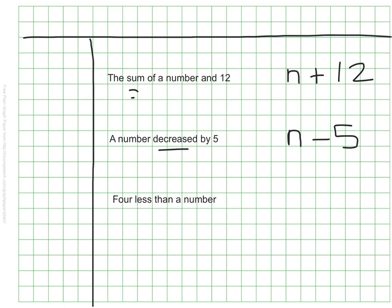I wrote that it would be the number minus 5. So I used n minus 5. The next one here says 4 less than a number. Write down what you think that might look like algebraically. Again, this one I thought would be subtraction. It's 4 less than the number, so I'm starting with the number and taking away 4.